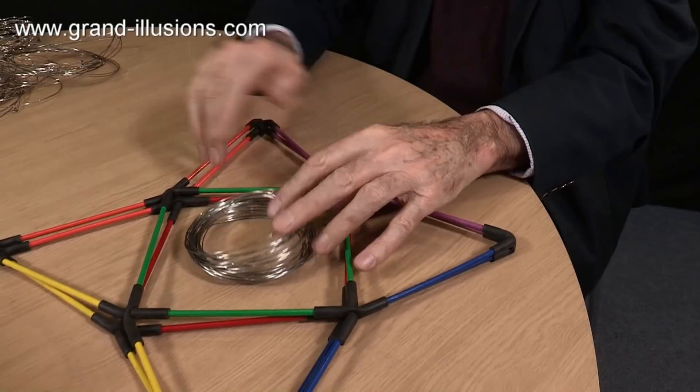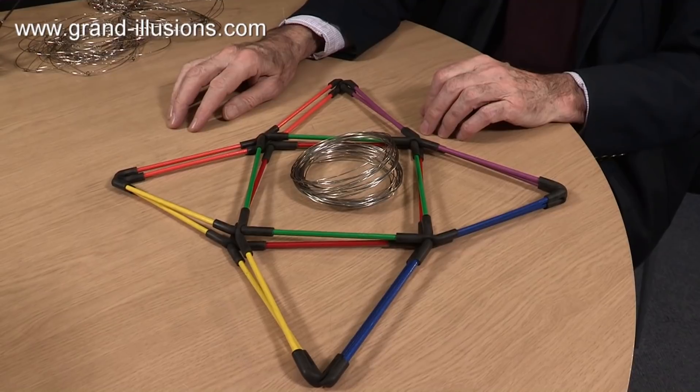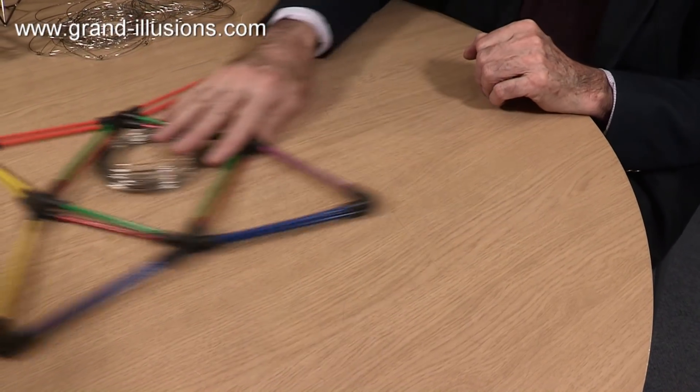So both those are the same topological shape, basically, of a jitterbug, a rod jitterbug and a rings jitterbug. Wonderful stuff.